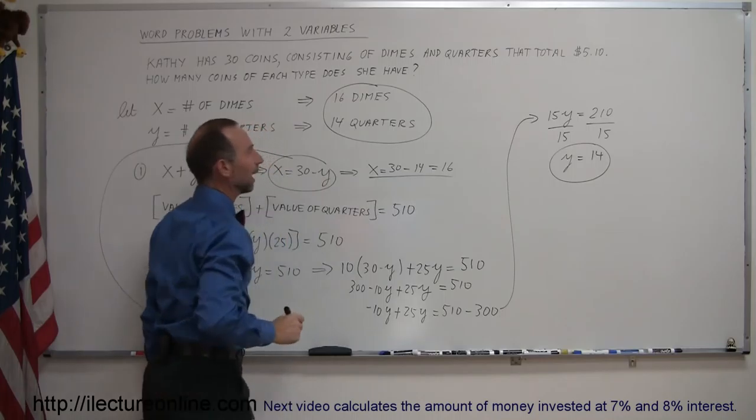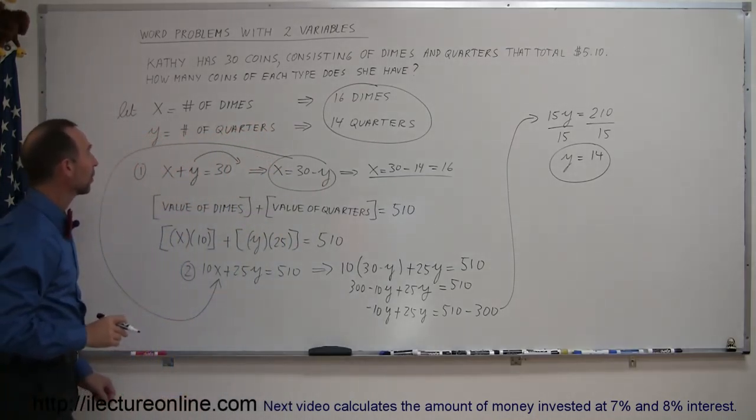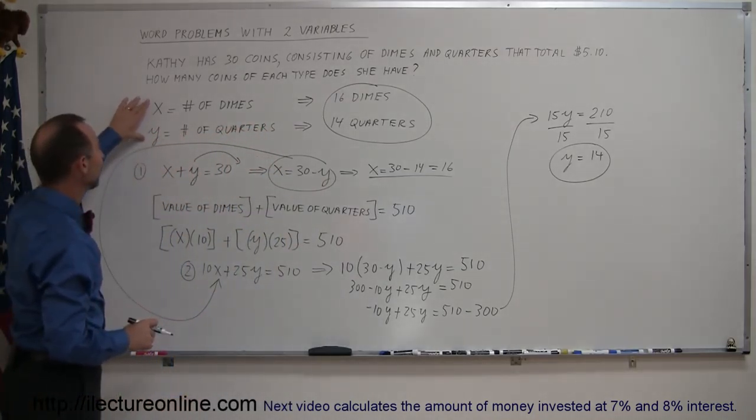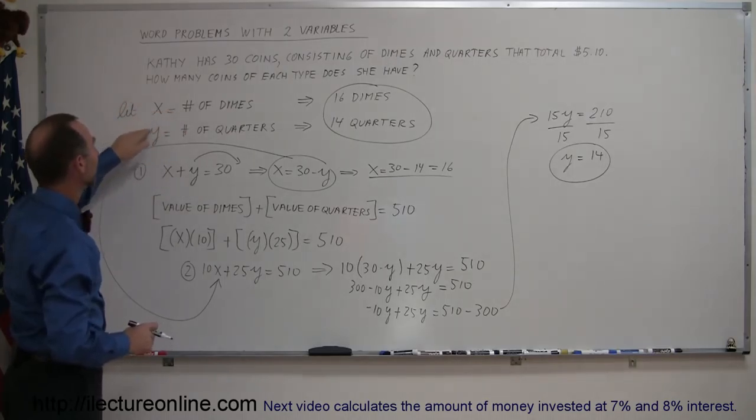And that's how we do a problem like that. Again, summarizing, always define your variables up front. x is the number of dimes, y is the number of quarters.